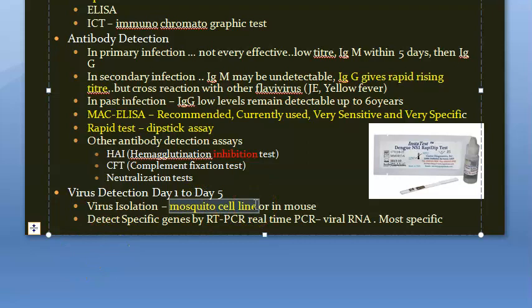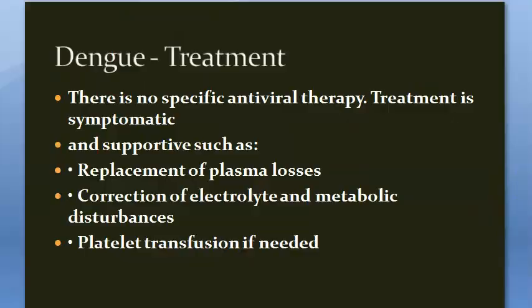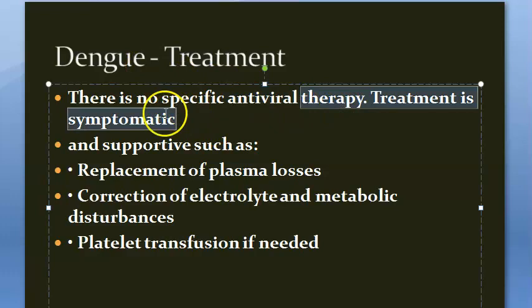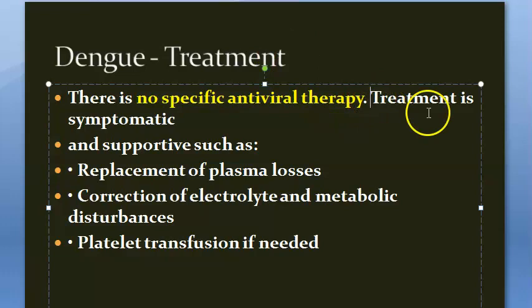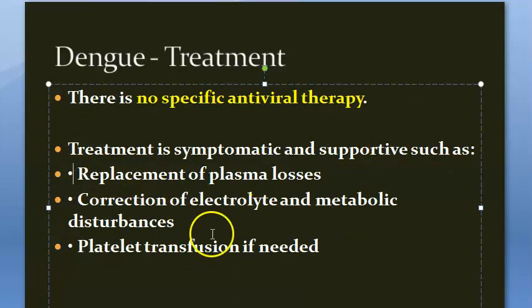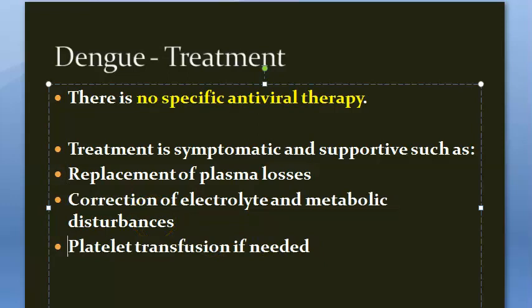Treatment of dengue: there is no specific antiviral therapy because dengue is usually a self-limiting condition. Symptomatic and supportive care is given — plasma loss is managed, platelet transfusion may be performed, and electrolyte and metabolic imbalances are corrected.